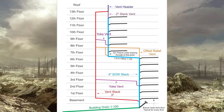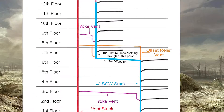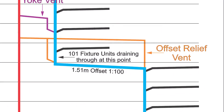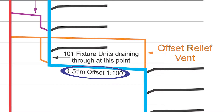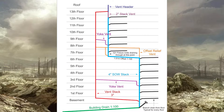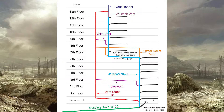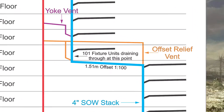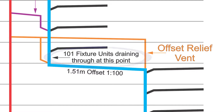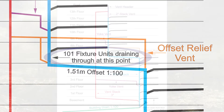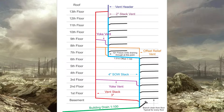First of all, when do you need it? Your offset needs to be more than 1.5 meters — my offset is at 1.51 meters. Next, I need to be receiving discharge from more than two stories above the offset — I've got about six stories discharging into the offset. And I need to have more than 100 fixture units draining into that offset — I have 101. I have to meet all three of those requirements before I need an offset relief vent, and I have, so now I need one.